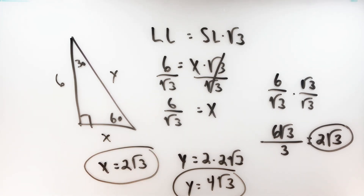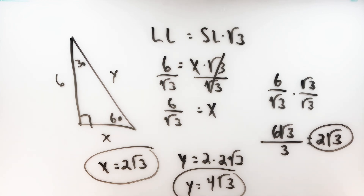Having both special right triangle relationships in your back pocket is going to help tremendously when you venture into trigonometry. If you remember the 45-45-90, the hypotenuse is root 2 times the leg — that's going to help you out a lot down the road. If this was helpful, be sure to give this video a thumbs up and consider subscribing to the Geomestic channel. Thanks a lot for watching — we'll see you next time.